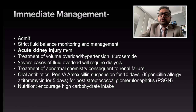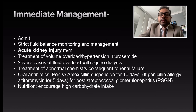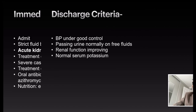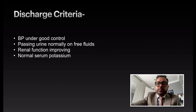Treat abnormal biochemistry as a consequence of renal failure. Give oral antibiotics — phenoxymethylpenicillin (Pen V) or amoxicillin suspension for 10 days; if penicillin-allergic, consider azithromycin for 5 days for post-streptococcal glomerulonephritis. For nutritional management, encourage high carbohydrate intake. Discharge criteria: blood pressure under good control, passing urine normally, improving renal function tests, and normal serum potassium level.